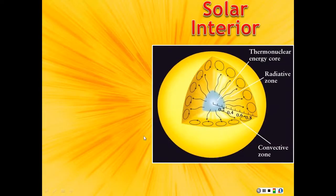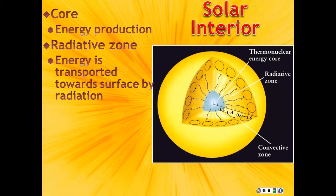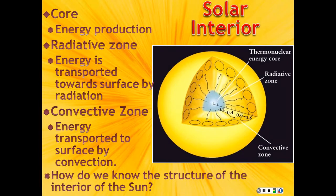We just finished talking about how energy is made inside the Sun in its core. We have the core where energy is produced, the radiative zone where energy is transported by radiation, and the convective zone where energy is transported by convection.